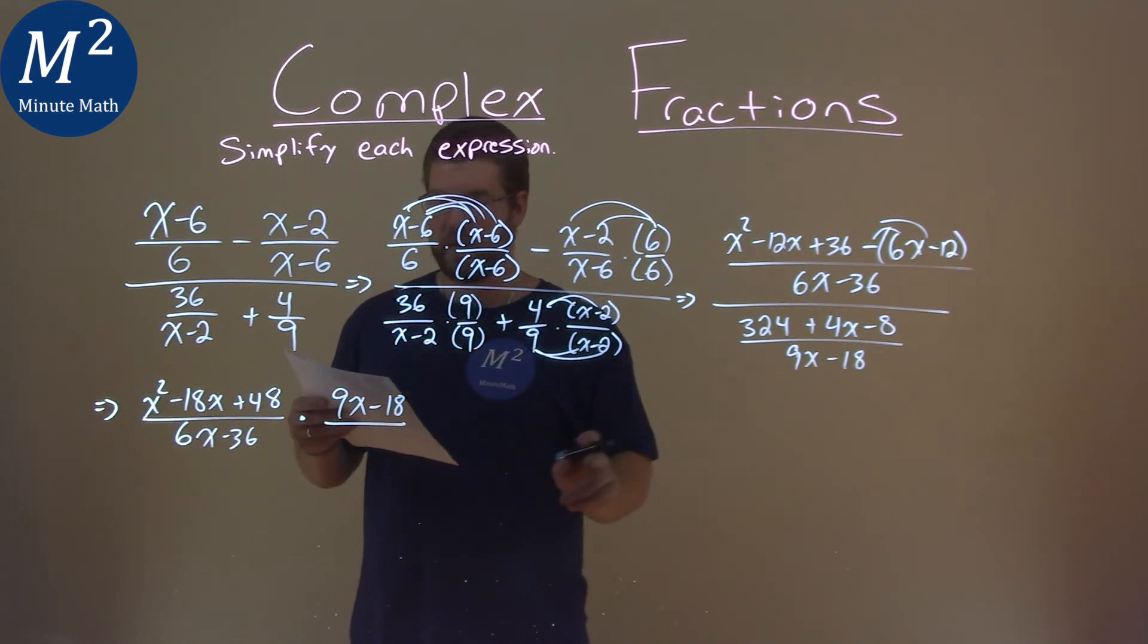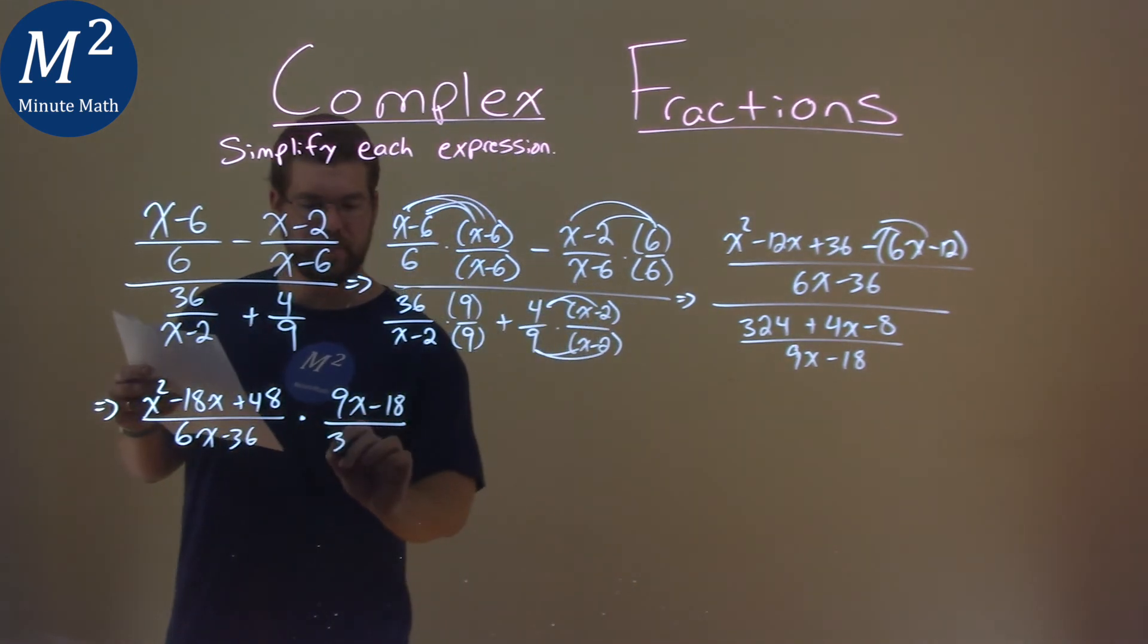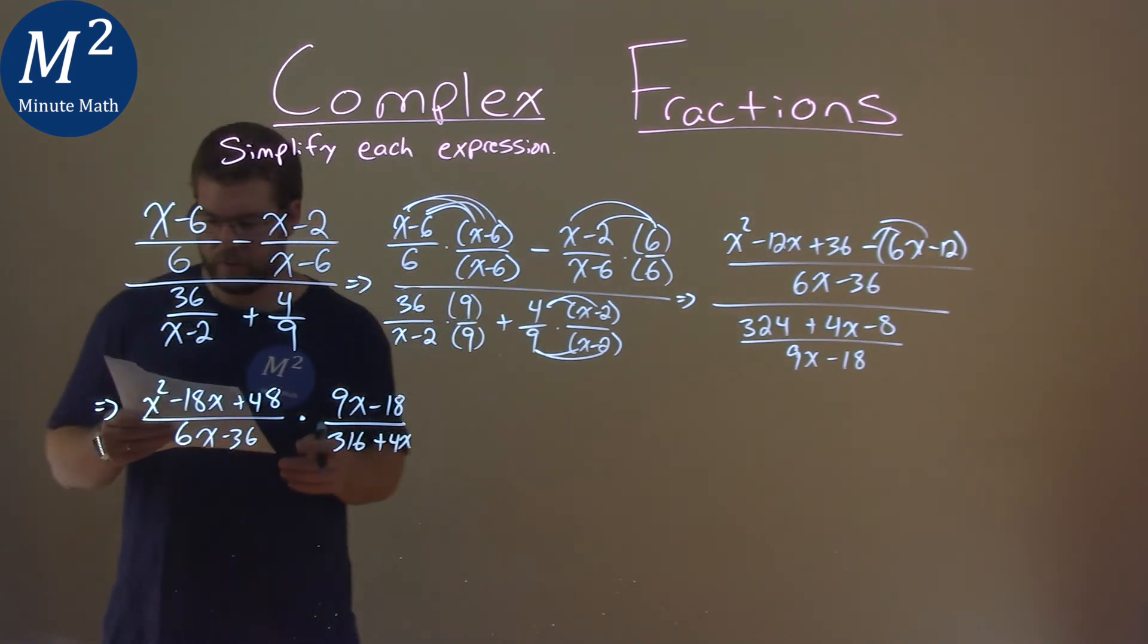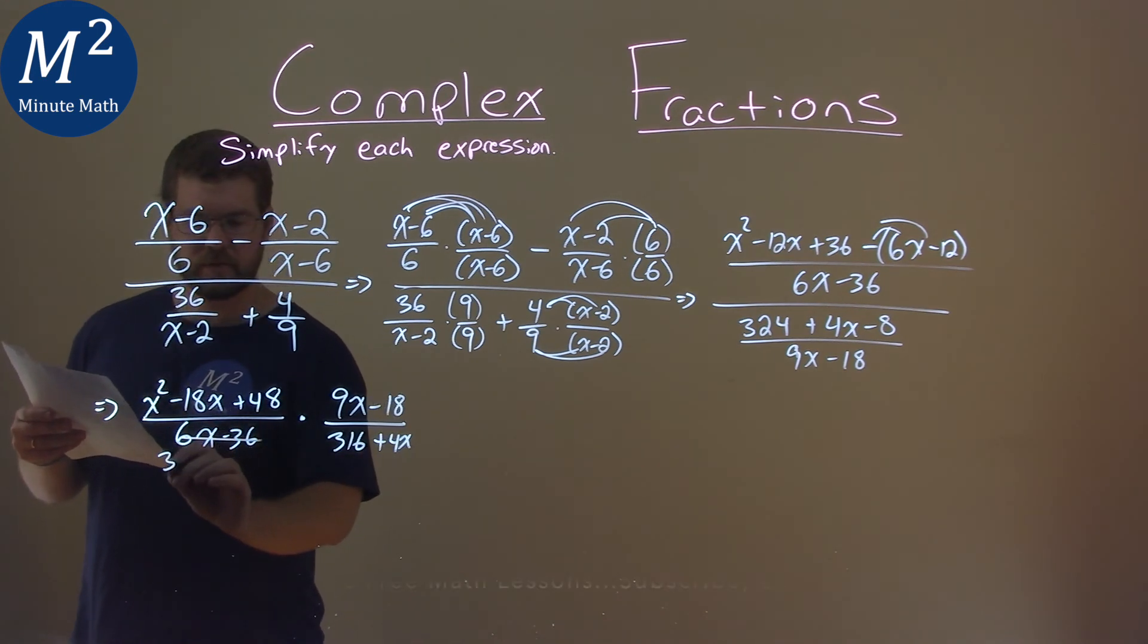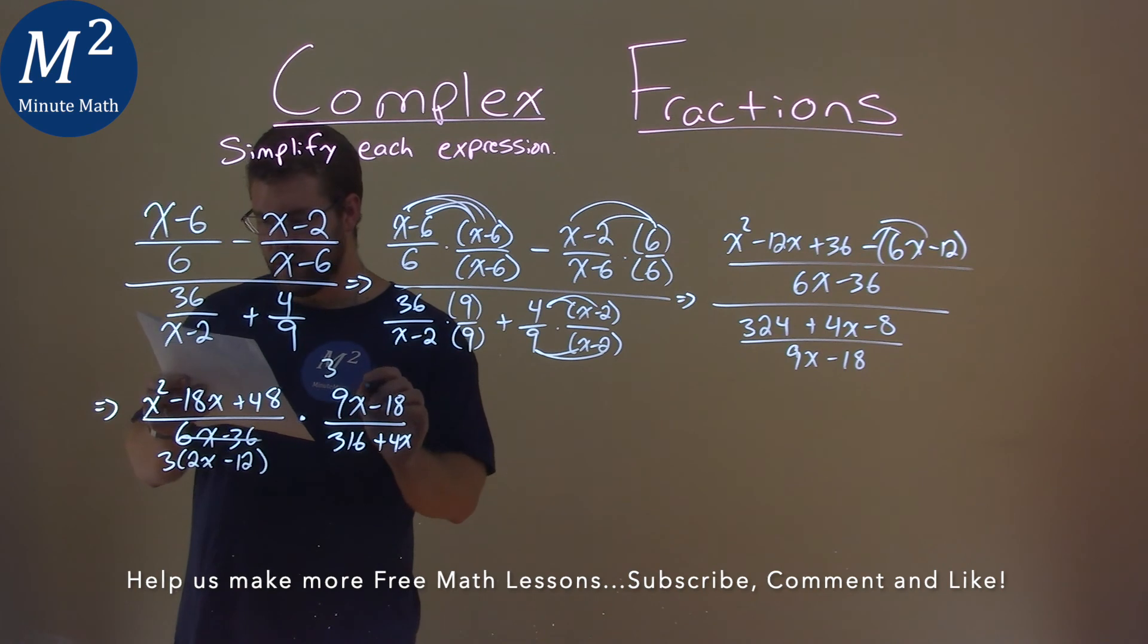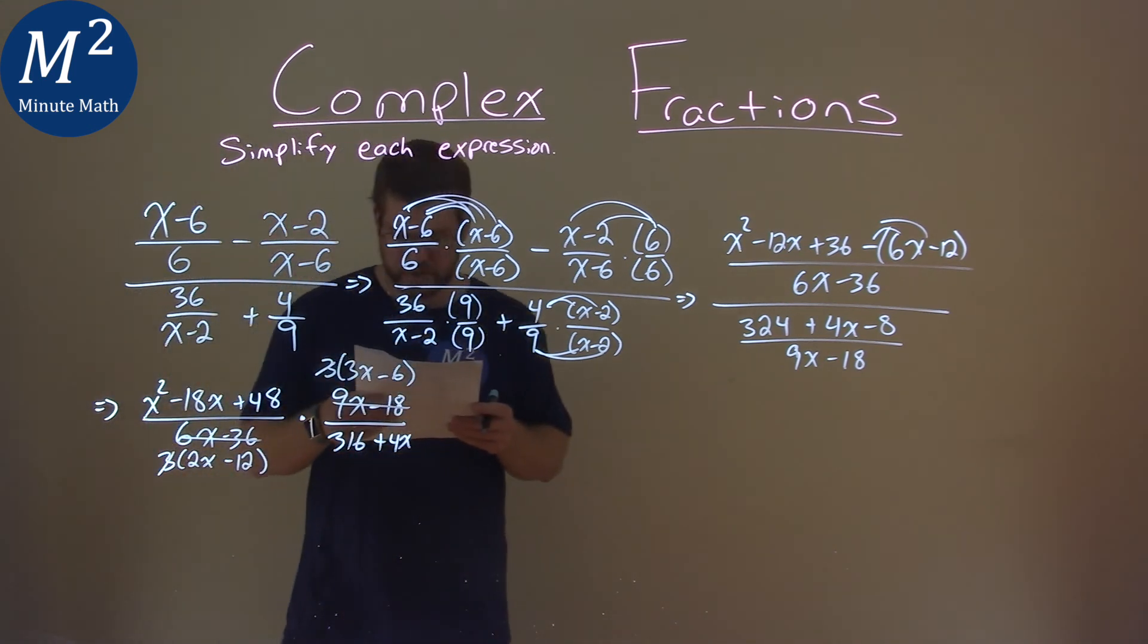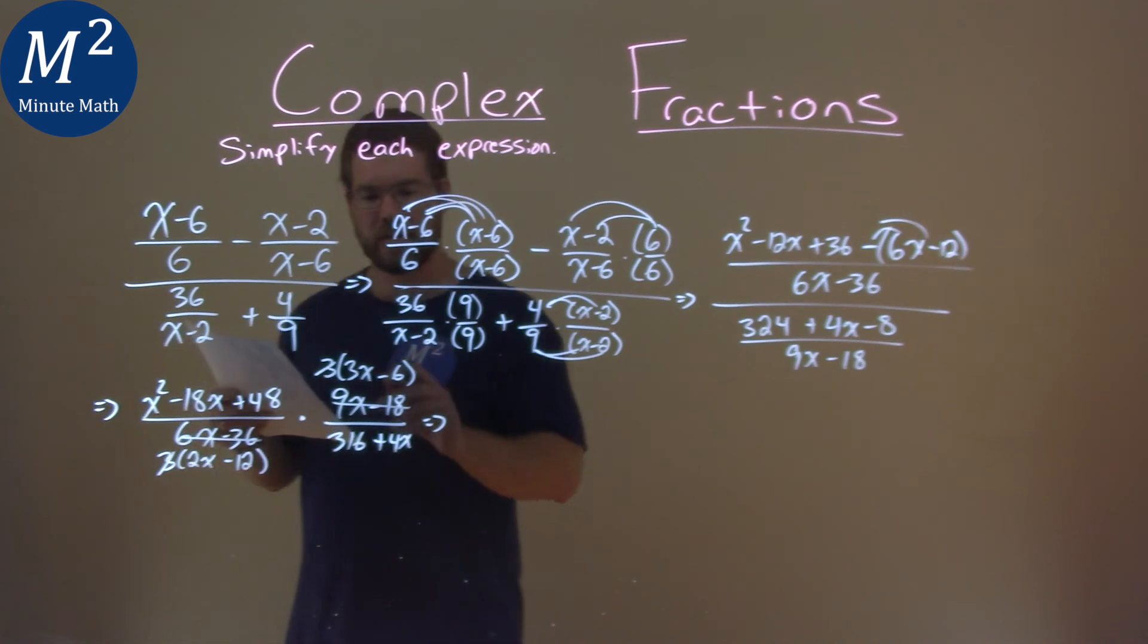Make sure we have this here, make sure I'm doing good. Yeah, 324 minus 8 is a 316 plus 4x. Okay. All lined up here. Okay. Now, one thing we can do when we simplify. Okay. I'm going to try to see if I pull out here, a 3 comes out of both of these. So, if I pull out a 3, I'm left at 3 times a 2x minus 12 here. And I can pull out a 3 up here. And I'm left with a 3x minus 6. So, I pull a 3 there, 3 there. These 3s can cancel each other out. And so, now, we have this whole big thing, x squared minus 18x plus 48 times 3x minus 6. Let's multiply that out.